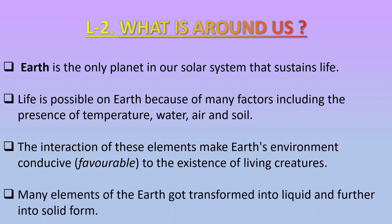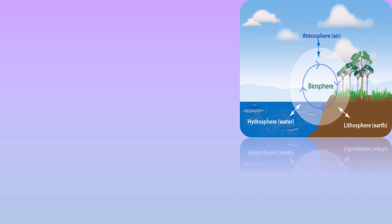Many elements of the Earth got transformed into liquid and further into solid form. Earth consists of the lithosphere, which means land — the solid portion of the Earth. The hydrosphere means water; about 71% of Earth's surface is water.